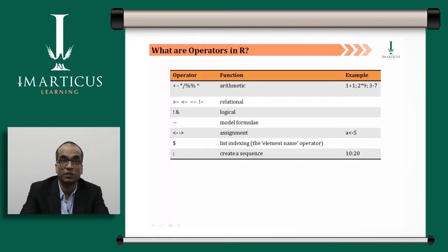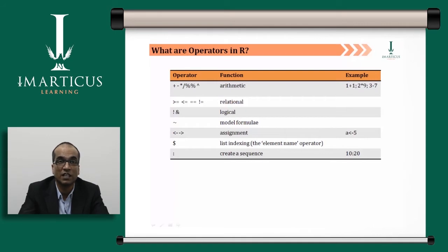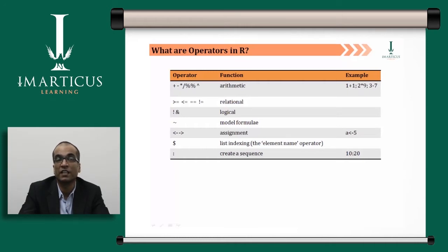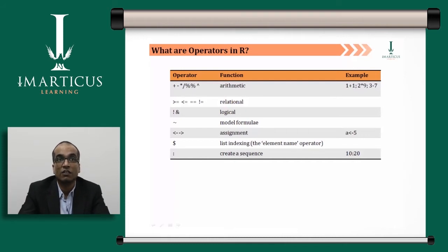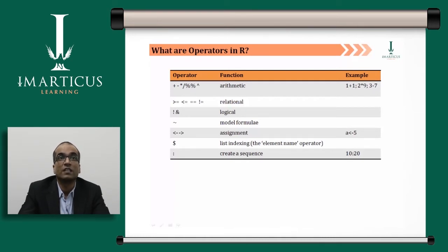So if you say 2^2 that means 2 raised to 2, which is 4. From the relational perspective, R uses greater-than (>), less-than (<), equal-to (>=, <=), double equal-to (==), and not-equal-to (!=) with an exclamation and equal-to mark. You cannot use the SQL-style not-equal notation; that won't work in R. Logical operators include NOT (!) and AND (&).